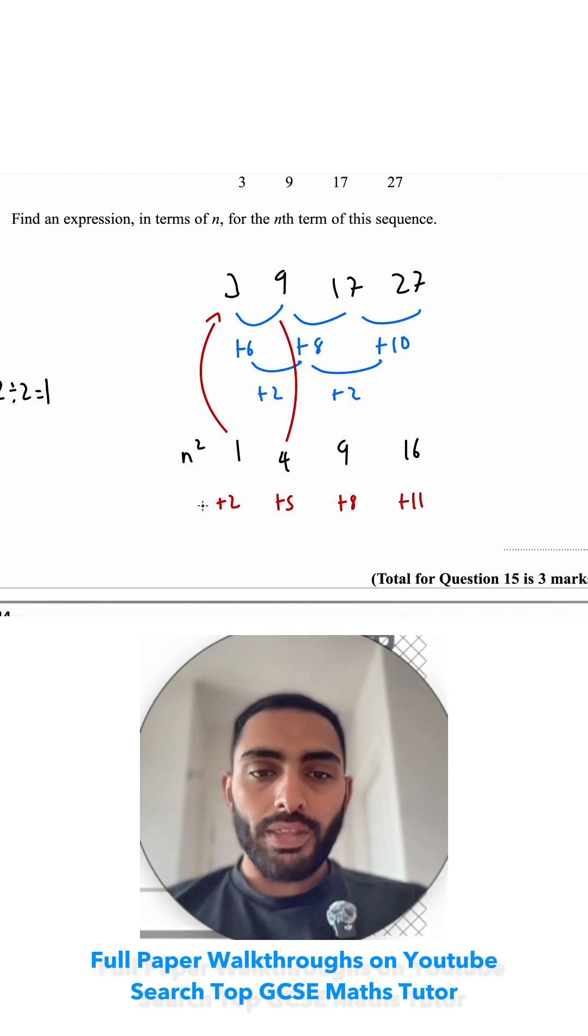So now I need to look for the nth term of this sequence. This one is going up in 3s, so I'm going to write 3n first and write my 3 times table: 3, 6, 9, 12. And I'm looking for the difference between my 3 times table and this sequence in red. From 3 to 2, I've taken away 1. From 6 to 5, I've taken away 1.